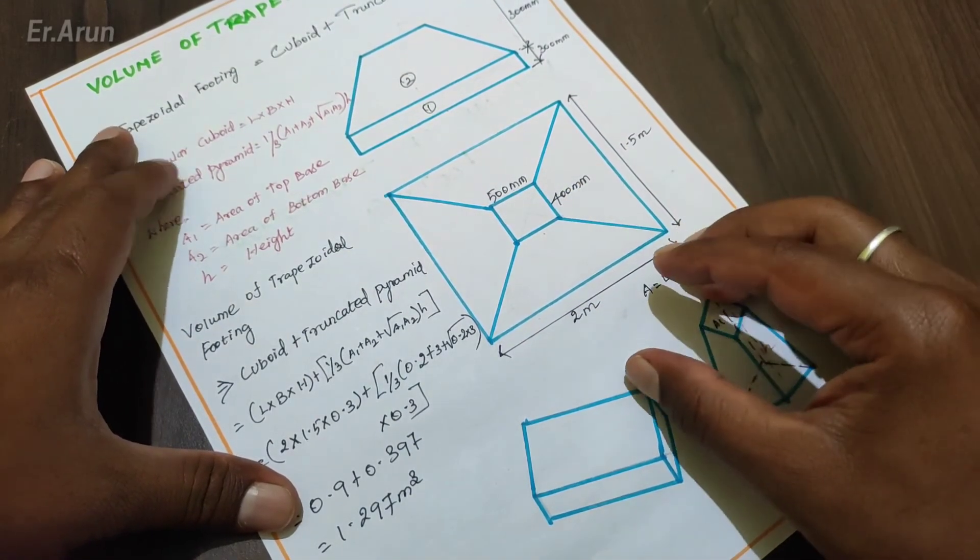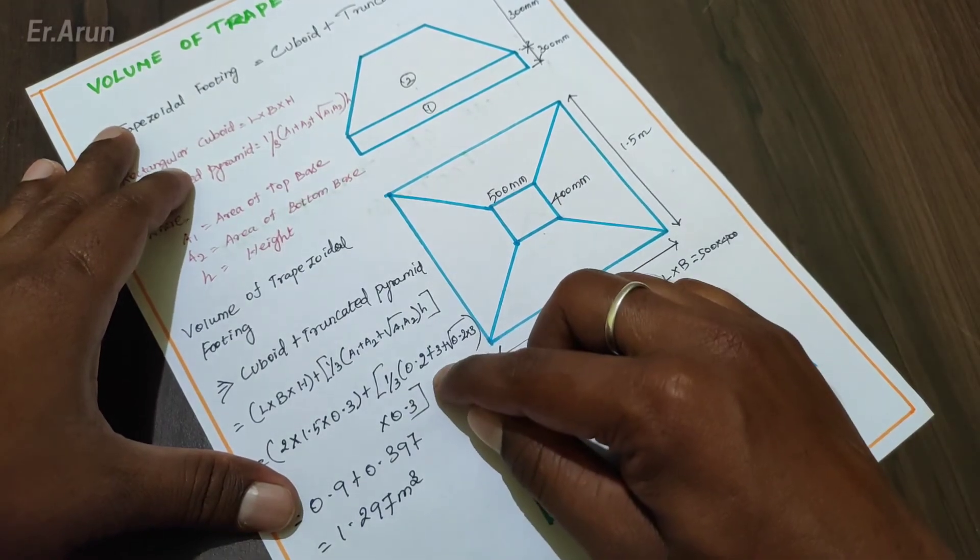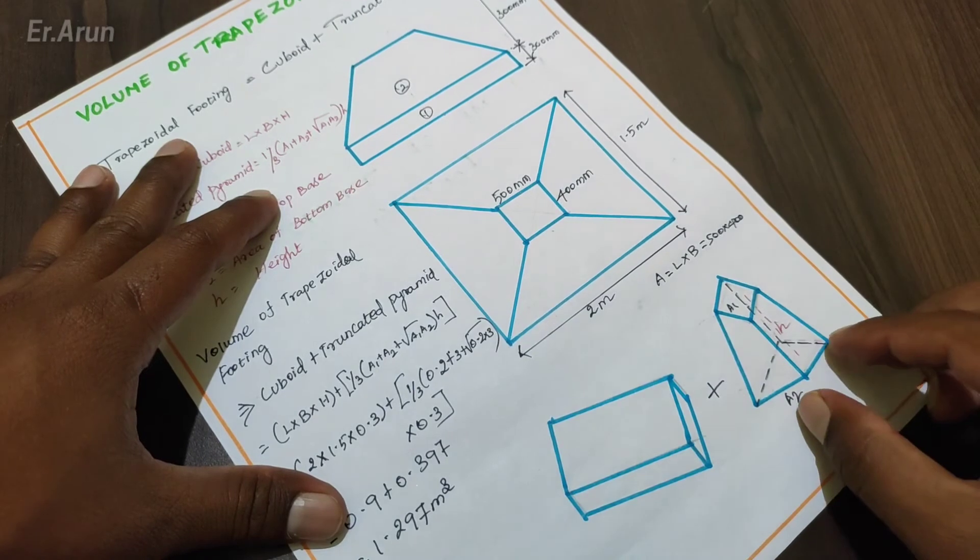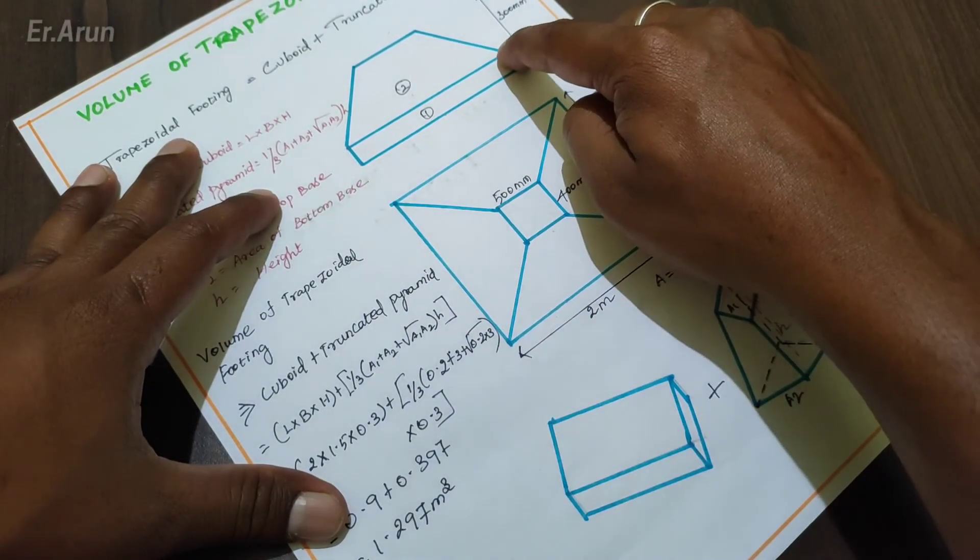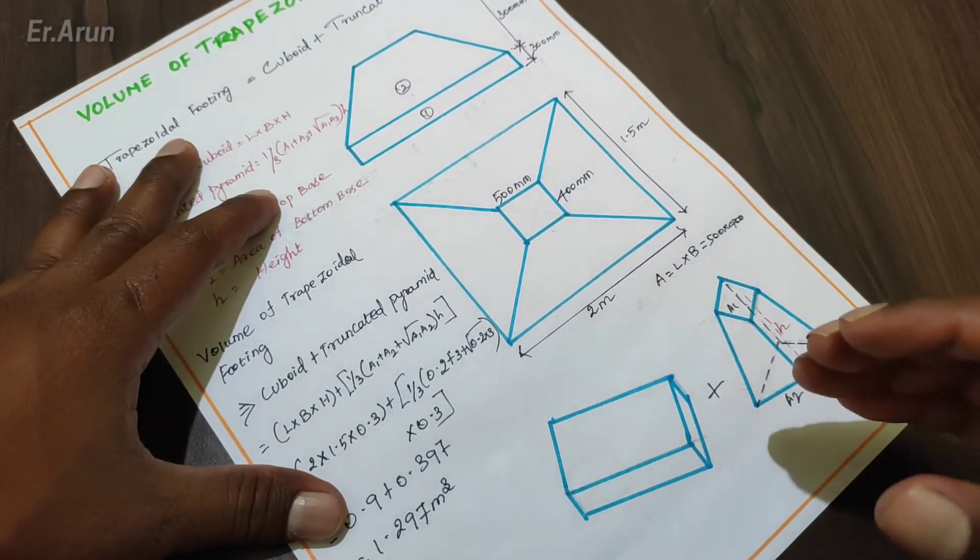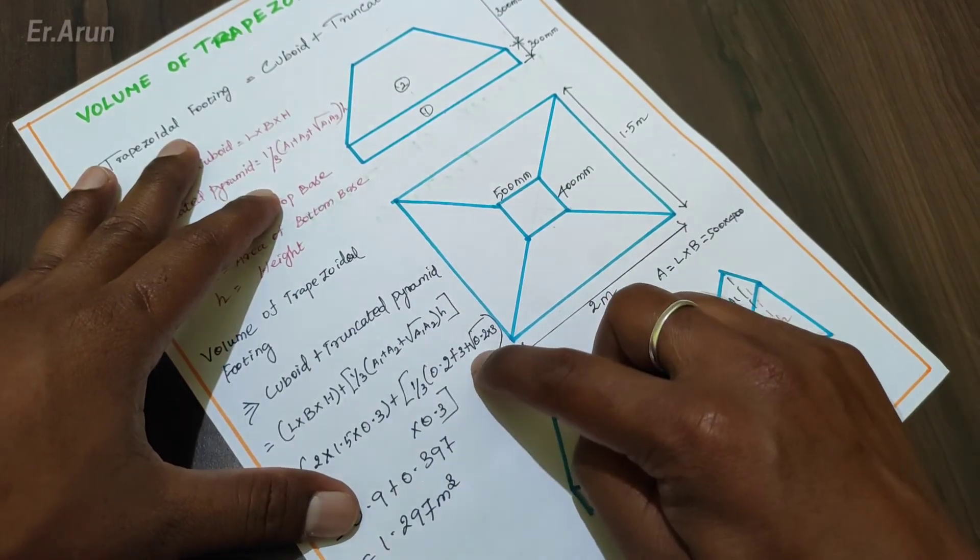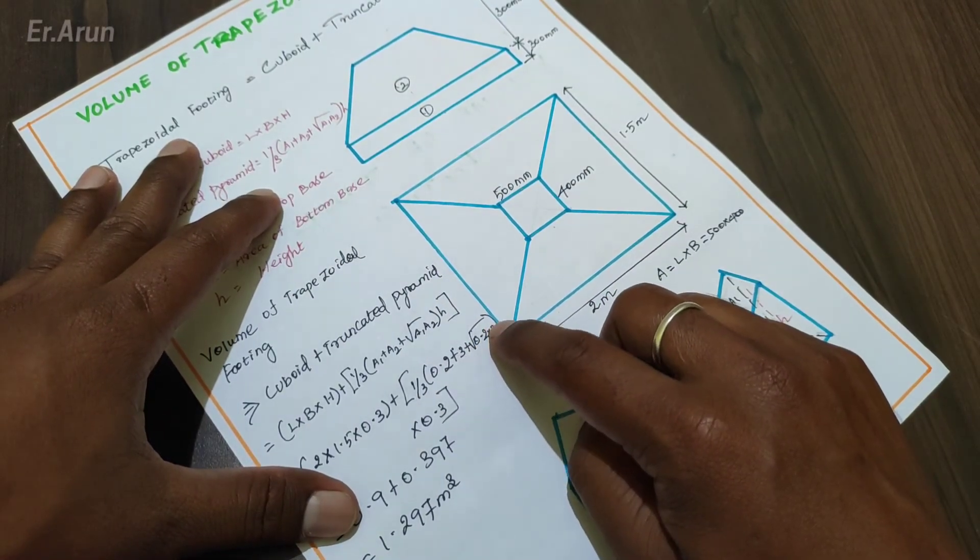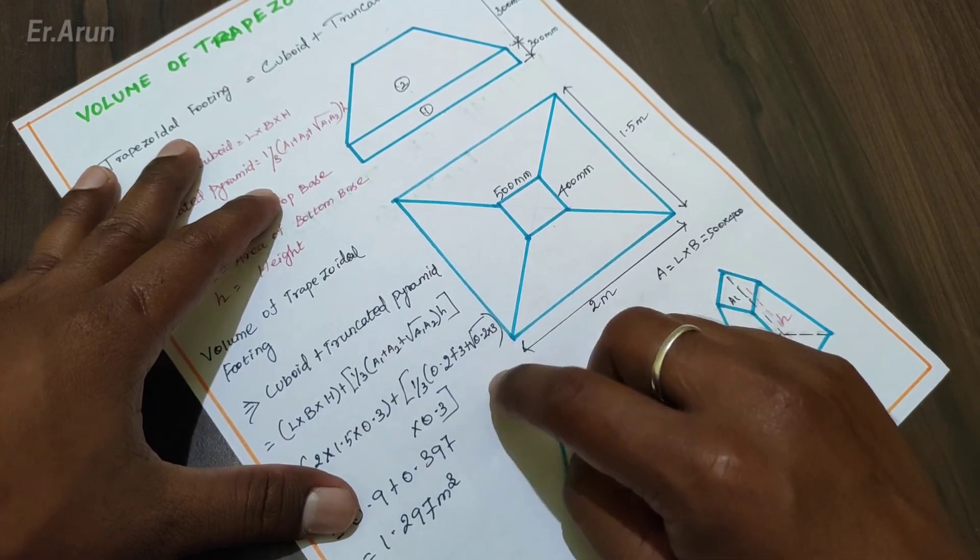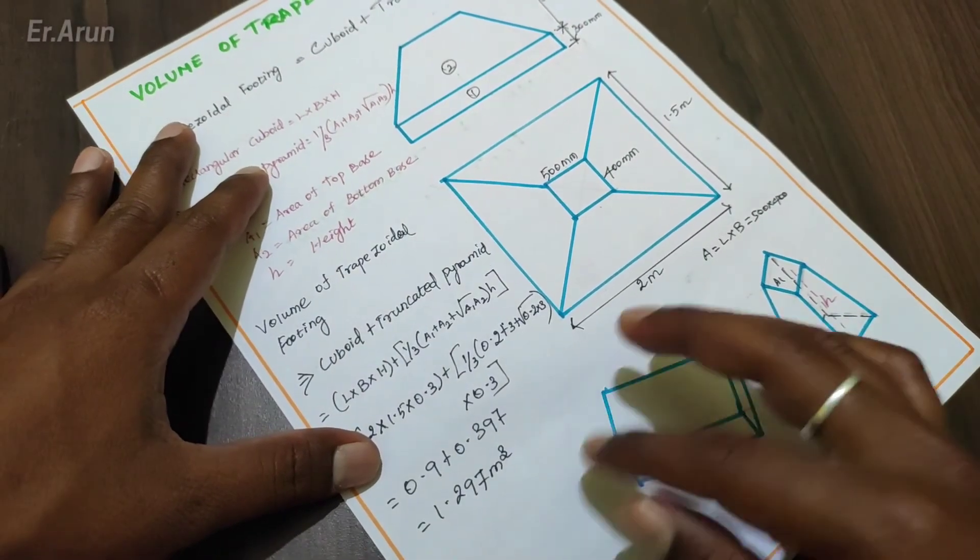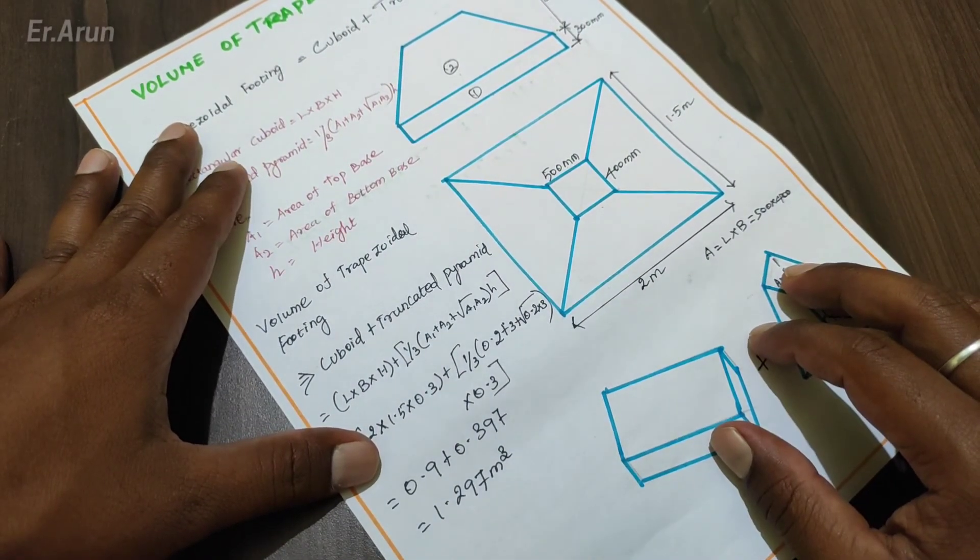We multiply here, we add 0.2m. We add bottom base and top base. That is 3 plus root of A1 into A2. If you look at the height, it will be 300 mm. The final answer is 1.29 cubic meters.